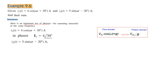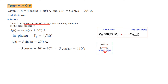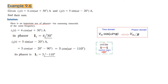For i2, it is in sine form, so we convert sine to cosine by adding minus 90 degrees. Minus 90 added to the angle converts sine to cosine. Simplifying, i2 is now in cosine form with magnitude 5 and angle minus 110 degrees. So phasor i2 is 5∠−110°.